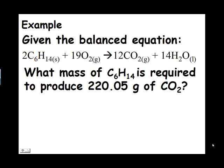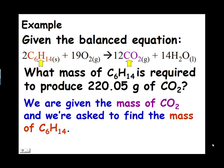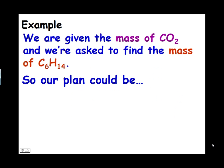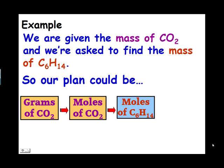Now we will work through an actual example using a real chemical equation. We are given the balanced equation and asked: what mass of C6H14 is required to produce 220.05 grams of CO2? A stoichiometry problem always involves two substances — one given and one asked for — and it doesn't matter which side of the equation each is on; we always use the same procedure. We are given the mass of CO2 and asked to find the mass of C6H14, so our plan is: grams of CO2 → moles of CO2 → moles of C6H14 → grams of C6H14.